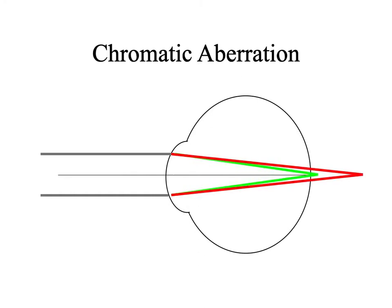With a hyperopic patient or an overcorrected myope, the green is going to be sharper because it's closer to the retina, even as both wavelengths are focusing posterior to the retina. We're going to revisit the chromatic aberration topic later on.